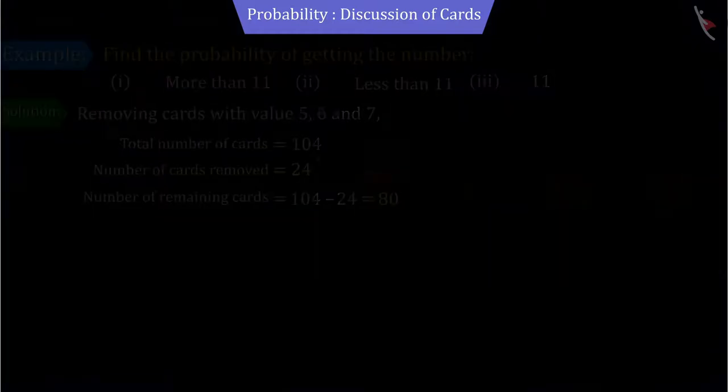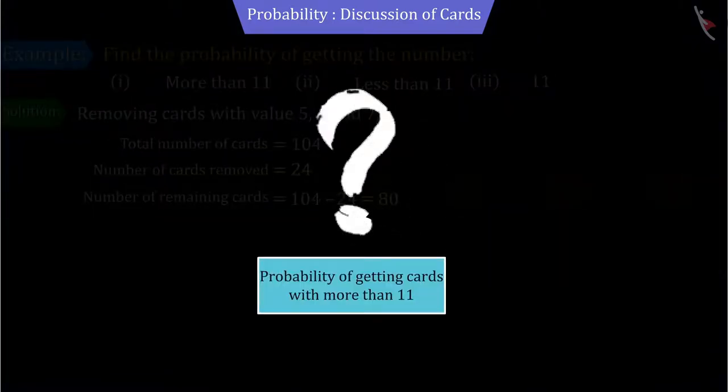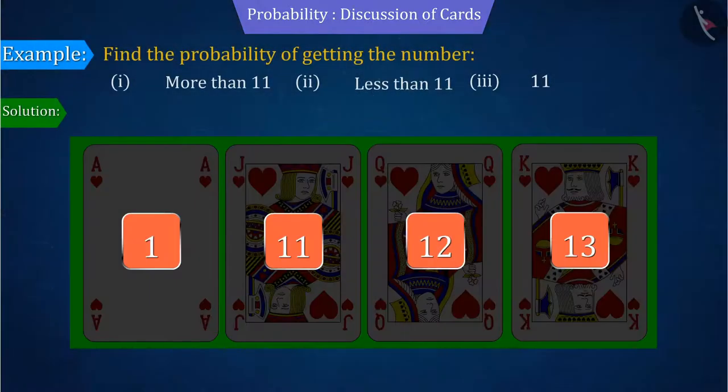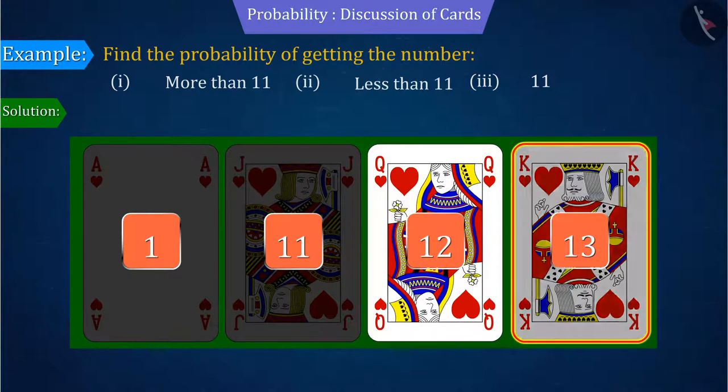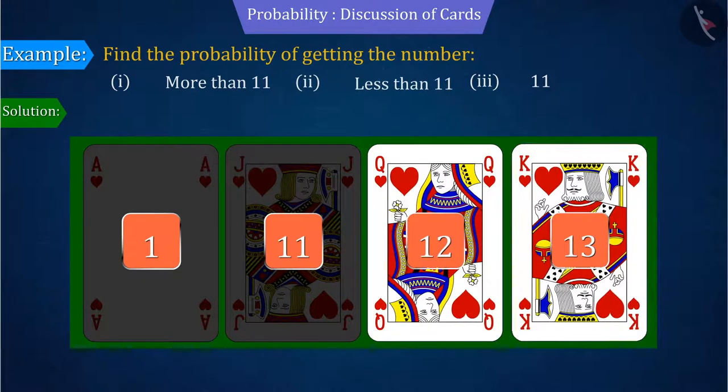So let's first discuss the event of getting cards with a value more than 11. According to the question, cards whose value is more than 11 are only Queen and King, whose values are 12 and 13 respectively.